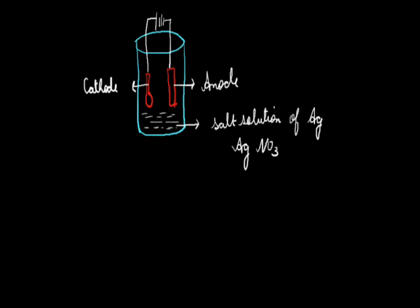We have connected this whole system to a battery. So whenever there is a flow of current, the atoms of silver will be depositing on the spoon, and we will be getting a coating of silver on that spoon. In this whole process we have used many terms like cathode, anode, and solution.